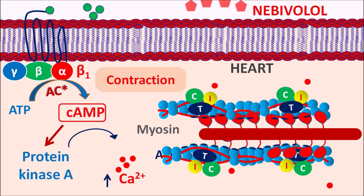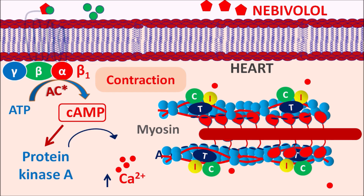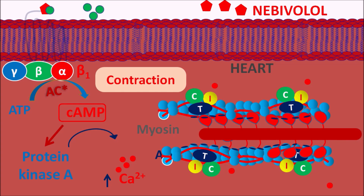Nebivolol is a beta blocker which can block these beta 1 receptors, inhibiting these receptors and resulting in the prevention of contraction. In this way, nebivolol can reduce both rate as well as force of contraction of the heart. This reduces the cardiac work as well as the pumping pressure, so that blood pressure is reduced.